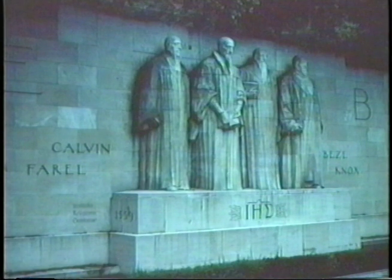Each of the four statues has a book in hand. Three of them—Farrell, Calvin, and Knox—hold Bibles. But Beza holds the governing rules of the Geneva Academy. Presbyterians are people who believe the Bible is going to issue practical guidelines for how we go about educating people and transforming society.